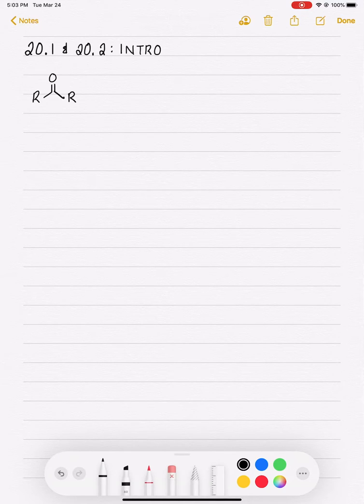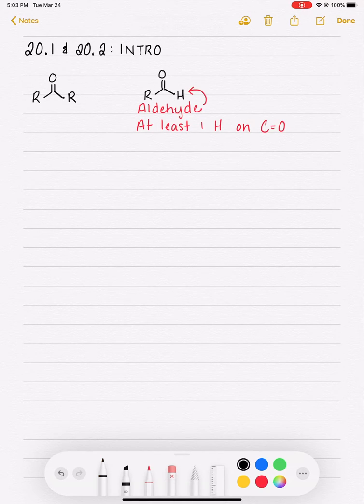So just as a refresher, the difference between aldehydes and ketones, because they are structurally very similar functional groups. An aldehyde is a carbonyl group that has at least one hydrogen attached. At least one on the carbonyl group. Aldehyde, it could have two hydrogens. It doesn't have to have an R group attached, so that is an example of an aldehyde. Okay, ketone just has two R groups on the carbonyl group. So they're pretty similar.